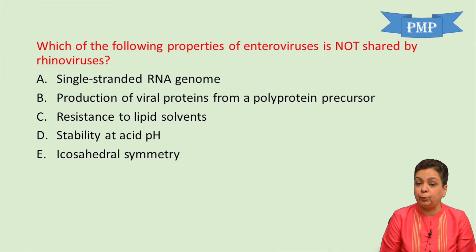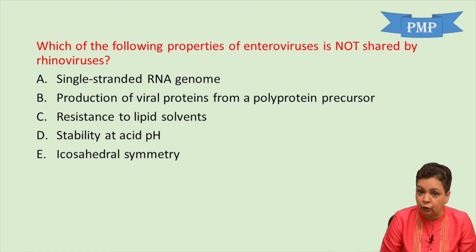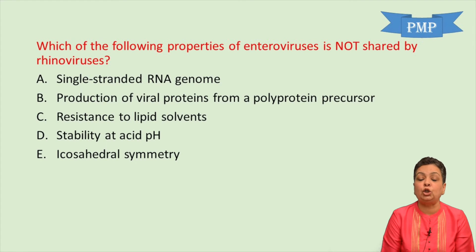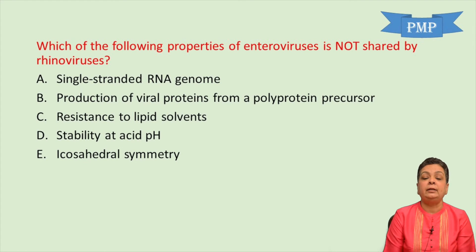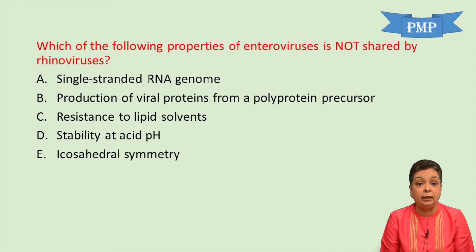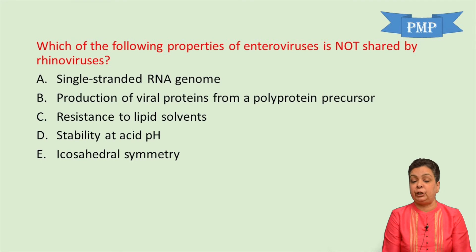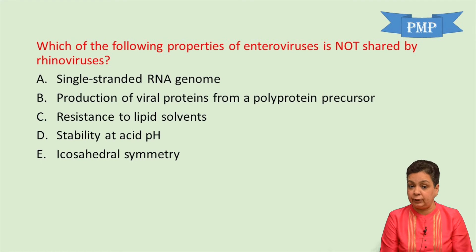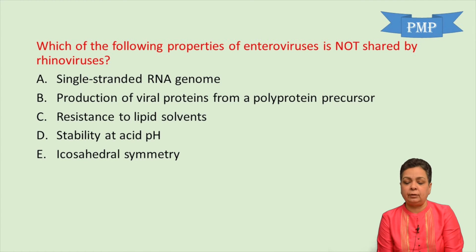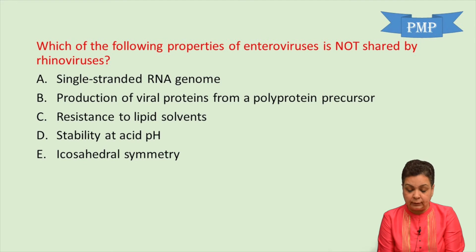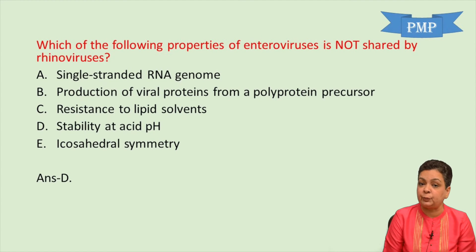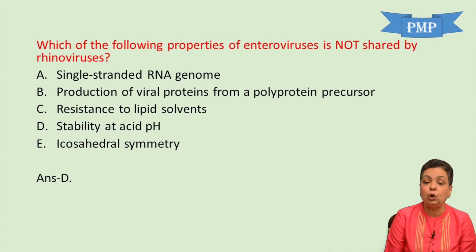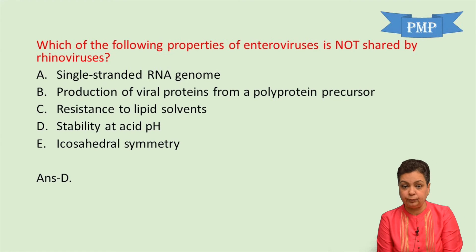MCQ: Which property of enteroviruses is not shared by rhinoviruses? The answer is stability at acid pH. Rhinoviruses are acid labile, completely inactivated at pH 3 or below, whereas enteroviruses are stable at acid pH. This is the key distinguishing feature.